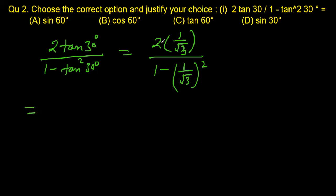This value can be written as 2 divided by square root 3, the first part 2 divided by square root 3, and this divided by 1 minus 1 by 3, square of this number.